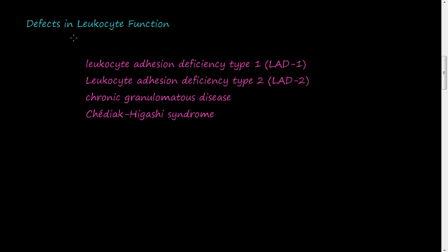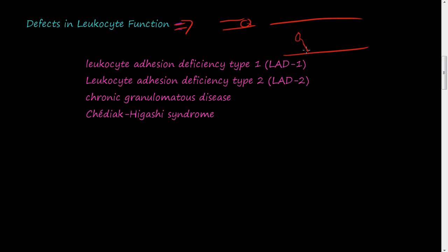Hopefully by now we have an understanding of leukocytes and what they do in inflammation and in the immune response to invaders. Just to recap: you have a blood vessel and a leukocyte. The leukocyte will undergo marginization, where it approaches the margin of the blood vessel and slows down as it attaches to proteins. Then it will diapedese — that's called diapedesis — squeezing out between the endothelial cells.